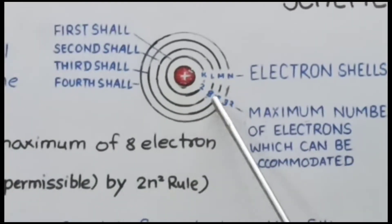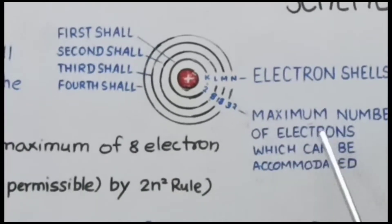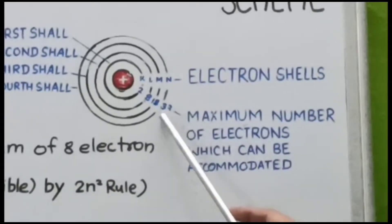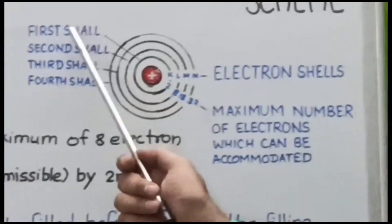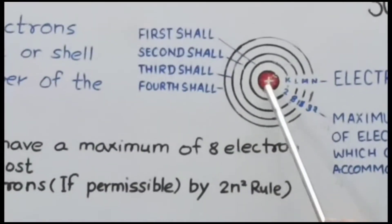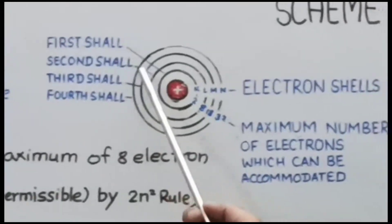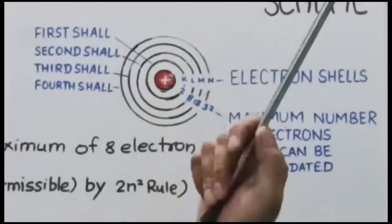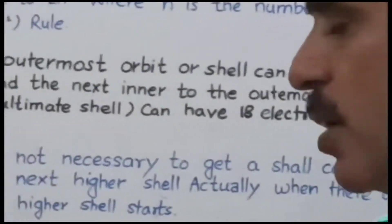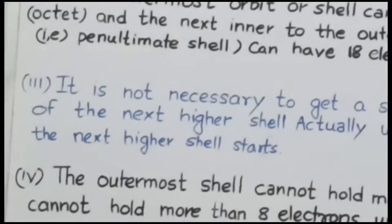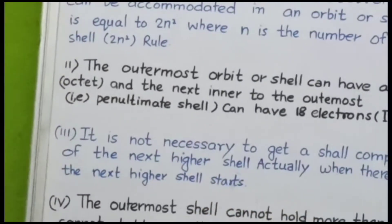Maximum number of electrons which can be accommodated — shells में electrons इस तरह distribute होते हैं। First shell नाभिक के तुरंत पास होती है, फिर second shell, फिर third, फिर fourth shell — इस तरह से हम shells को समझ सकते हैं। Outermost shell में maximum 8 electrons होते हैं जिसे octet कहते हैं।